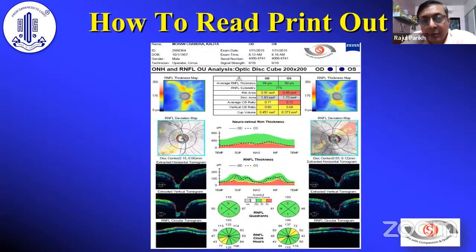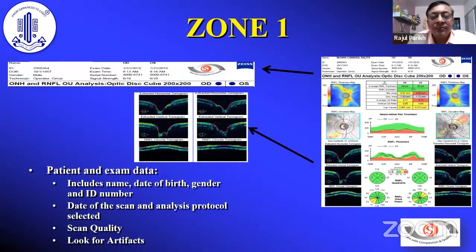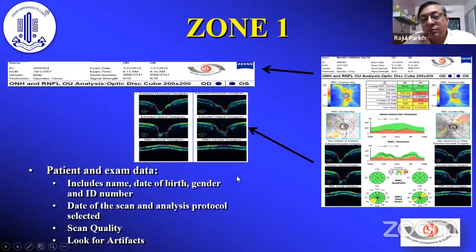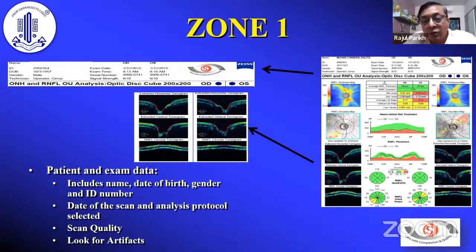Now, quickly about how to read the OCT printout. Like perimetry has 8 zones, I divide OCT into 4 zones. Zone 1 is the upper section where demographics are given — name and date of birth. Date of birth is very important because if the technician enters the wrong date, the machine will use the wrong age group for comparison, and there would be a problem.